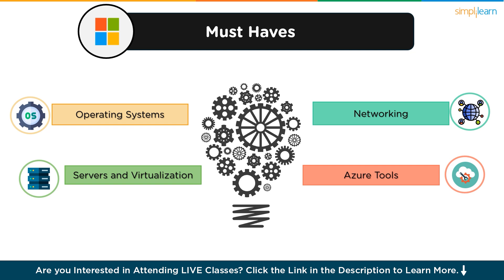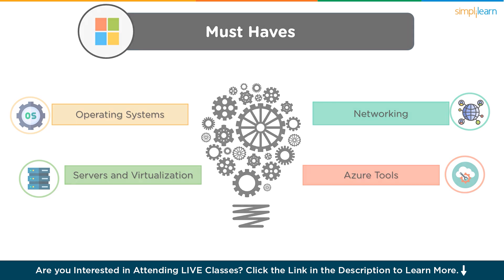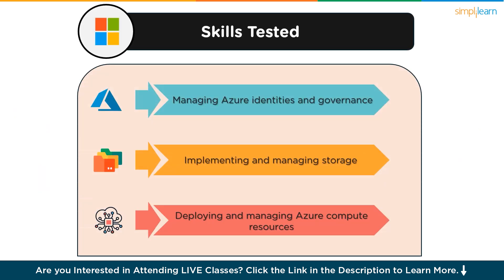Now let's talk about the key skills the AZ-104 exam measures. First, Managing Azure Identities and Governance — this includes managing Azure Active Directory objects, Role-Based Access Control (RBAC), and managing subscriptions and governance. Second, Implementing and Managing Storage — this covers managing storage accounts, data in Azure storage, and securing data. Third, Deploying and Managing Azure Compute Resources — this involves deploying and managing VMs, implementing Azure App Services, and automating deployment processes.